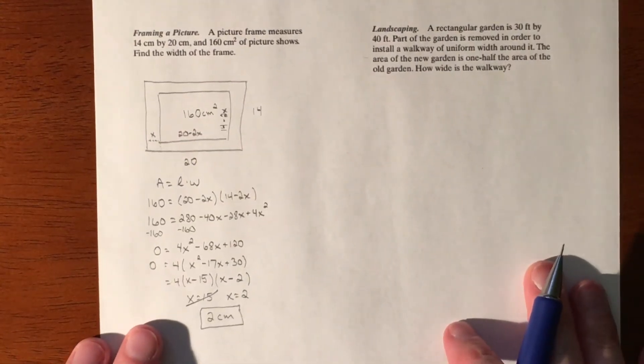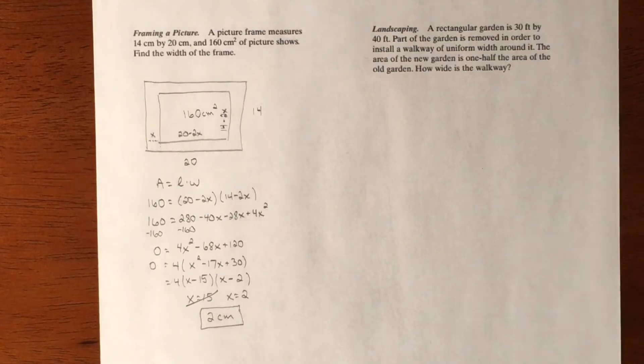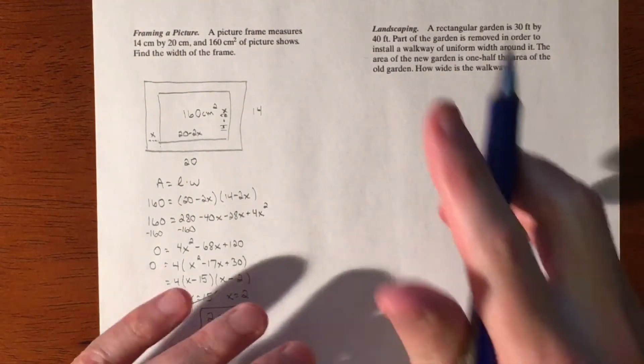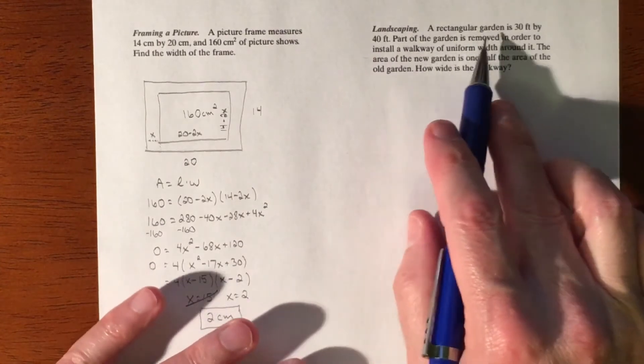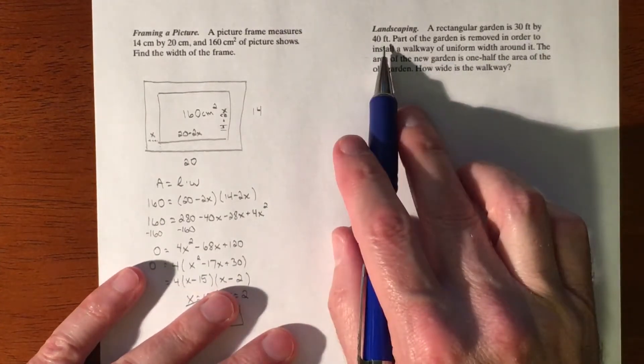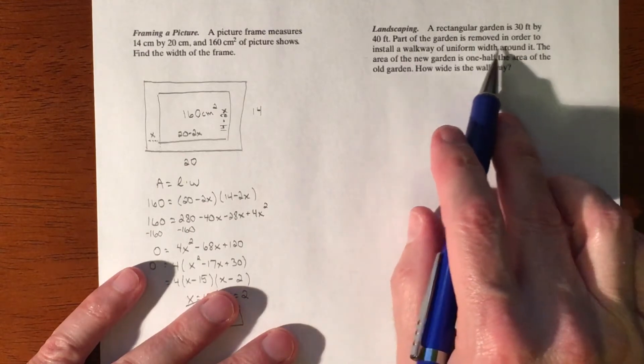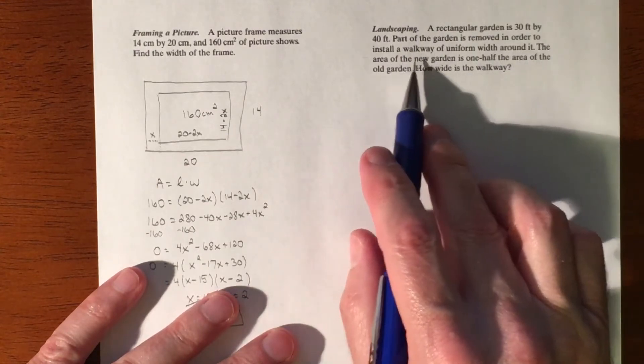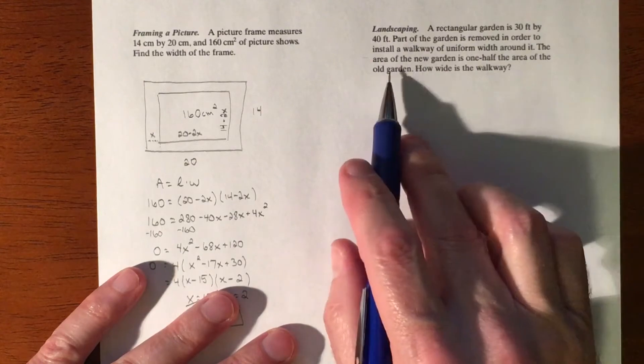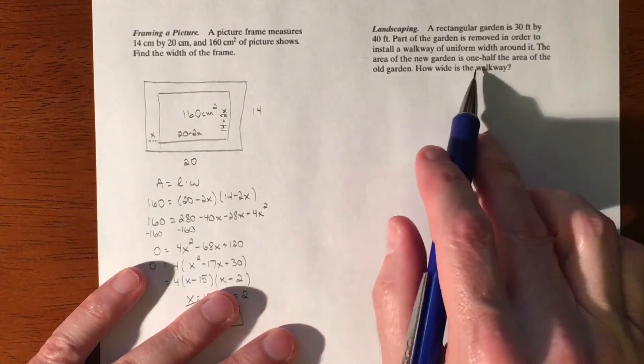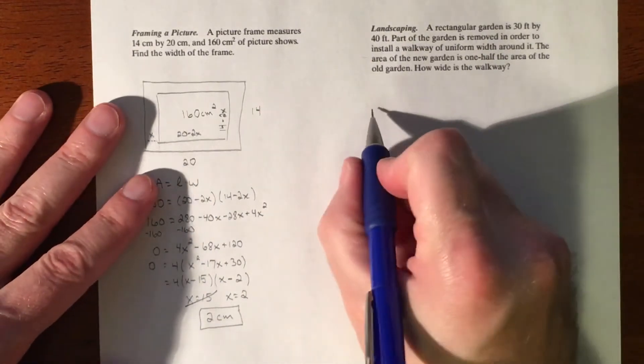All right, so we have one more word problem with quadratics dealing with ones that are factorable. We're trying to solve a landscaping problem that says a rectangular garden is 30 feet by 40 feet. Part of the garden is removed in order to install a walkway of uniform width around it. The area of the new garden is one half the area of the old garden. How wide is the walkway?